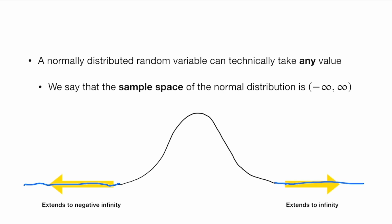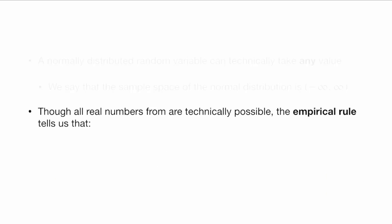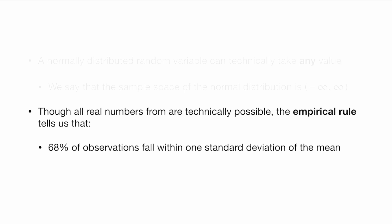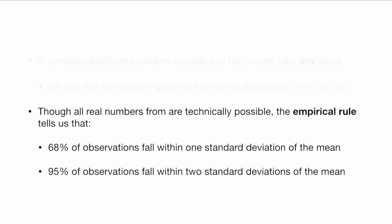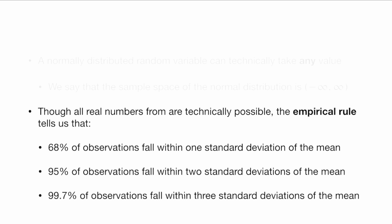However, these values on the outside — on the tails of the distribution — have very little probability. So though all real numbers are technically possible, the empirical rule tells us that 68% of observations fall within one standard deviation of the mean, 95% of observations fall within two standard deviations of the mean, and 99.7% of all observations fall within three standard deviations of the mean.